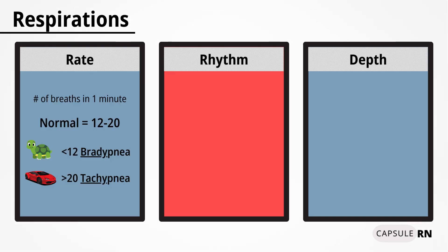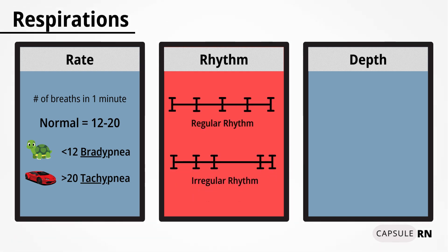Next is breathing rhythm, and this has to do with just that — the rhythm of the breathing. Rhythm can be either regular or irregular. A regular rhythm means the pause between each breath is the same length, whereas an irregular rhythm means the interval between each breath is not the same and varies in length. If the rhythm is regular, you can count respirations for 30 seconds and multiply by two. If the breathing is irregular, make sure you count for a full minute.